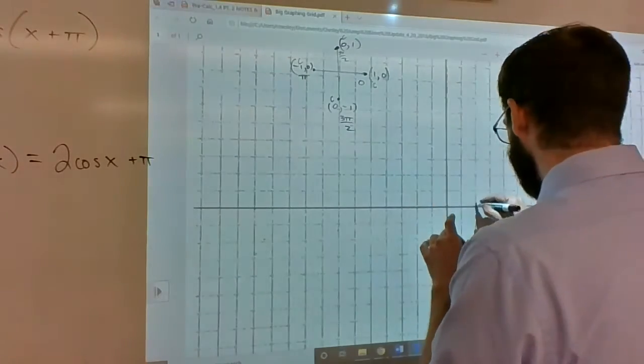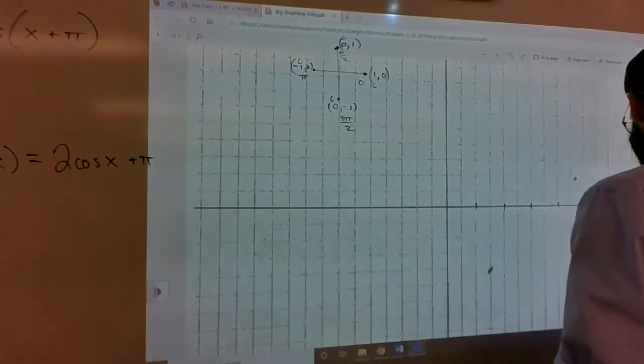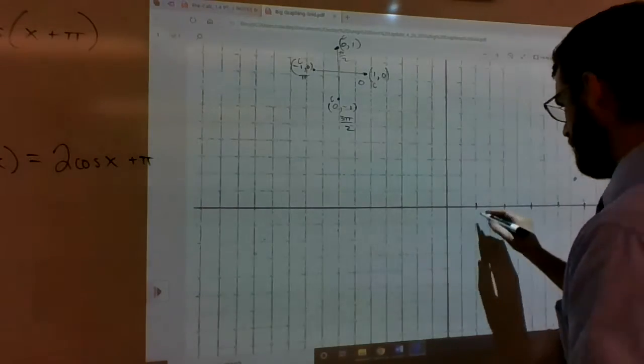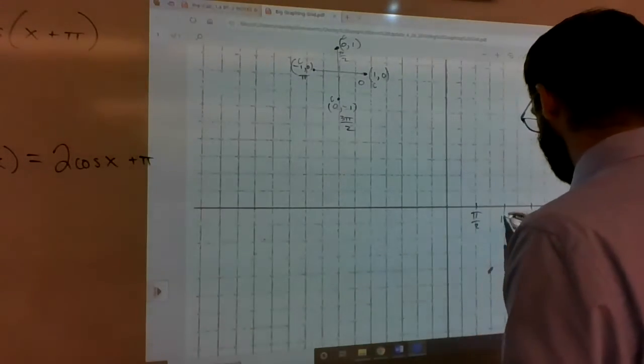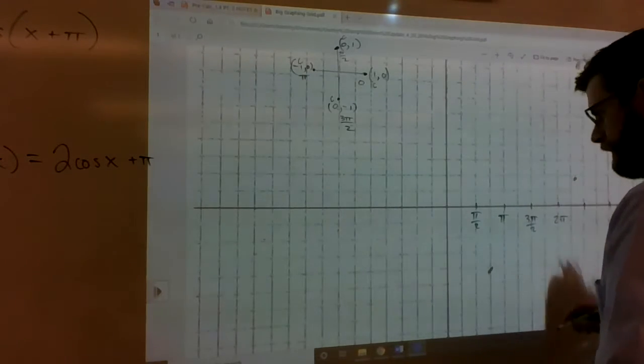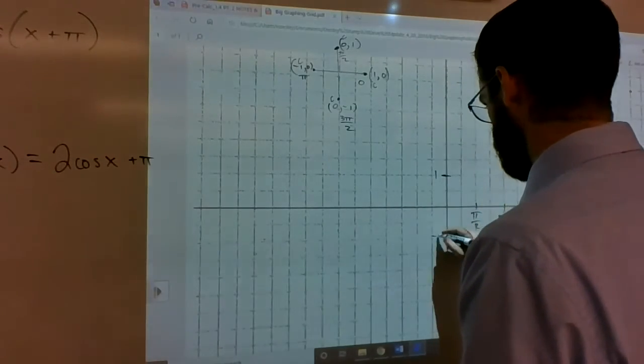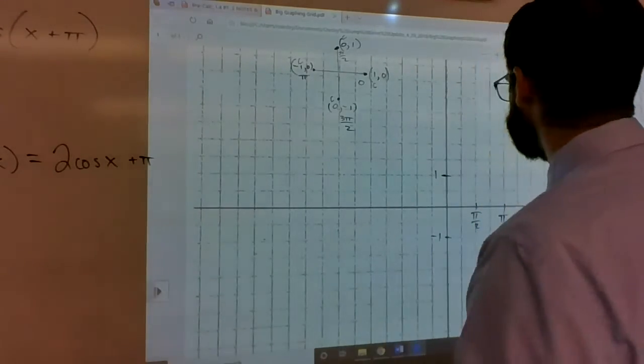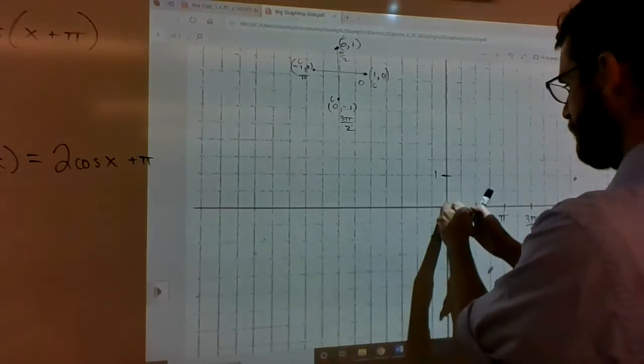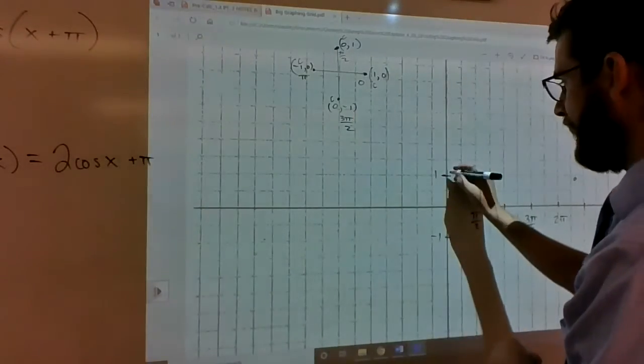So, if every other one on the x-axis is a π/2 value, and every other one on the y-axis is a value of 1, if we start at 0 radians, cosine is going to have a value of 1.